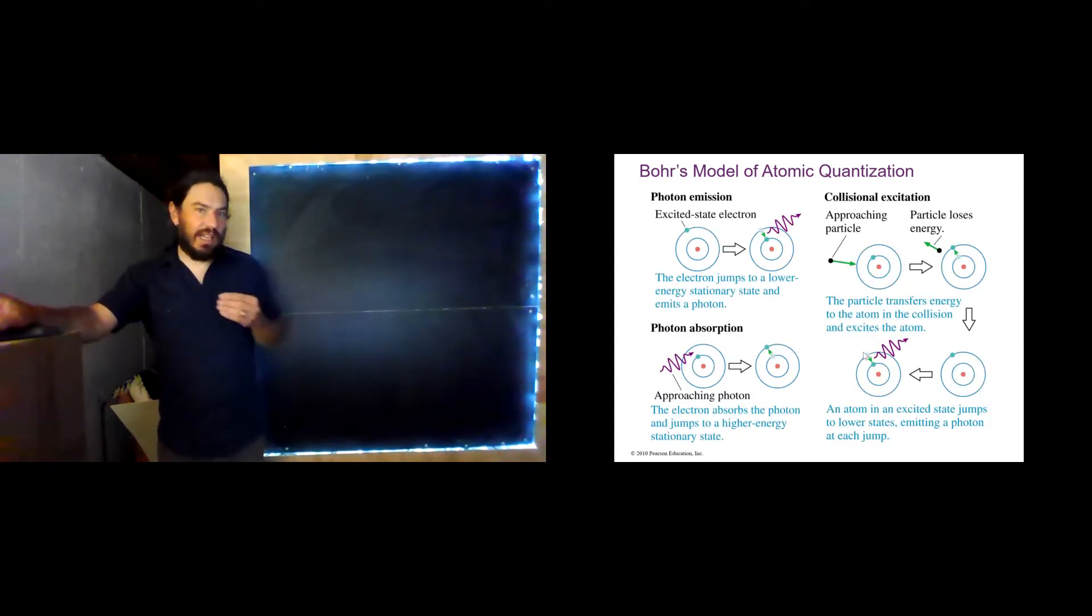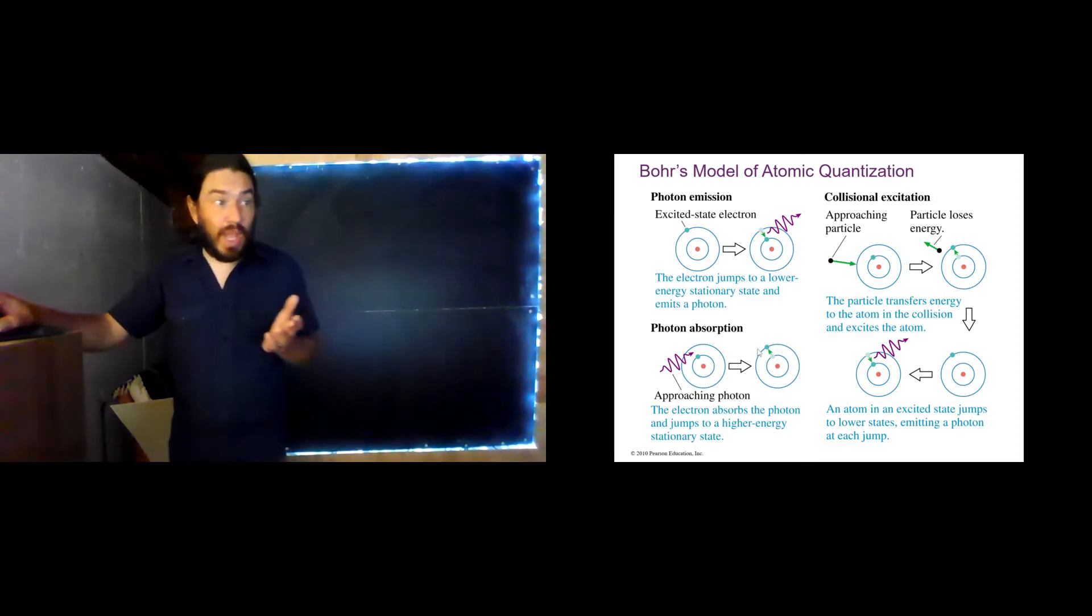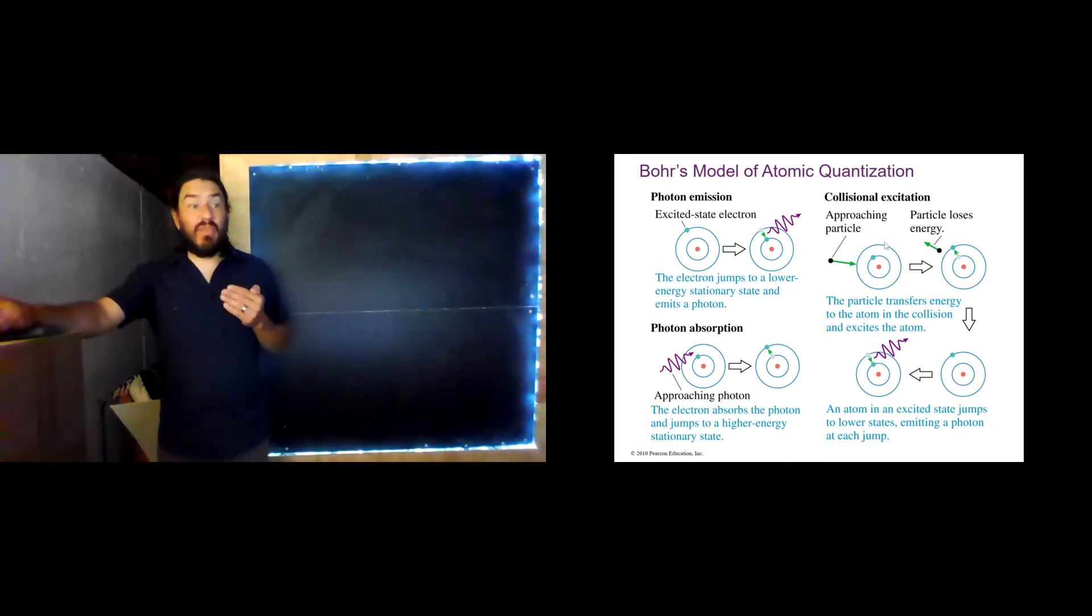So how can an electron transition between states? Well, it can move from an excited state to the ground state by releasing some energy. That energy will be released in the form of a photon. How can it be excited?